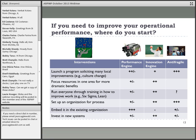Focusing resources in one area for more dramatic benefits — as done with a healthcare insurance company by concentrating belt activity on provider relationships — positively impacts the performance engine but takes resources away from broader impacts. It is definitely an innovation approach. Whether it's anti-fragile is unclear and depends on implementation.